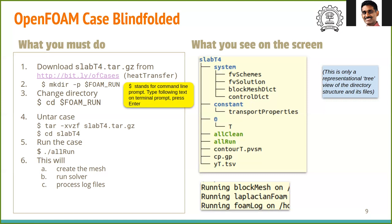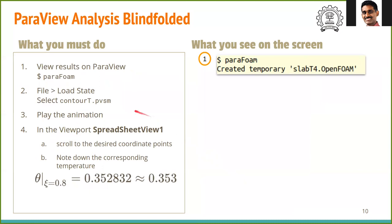Now we can process the results on ParaView. Here again, we have kept everything ready for you. Type paraFoam. Note that this is not ParaView but paraFoam. This is a special way to call ParaView to process OpenFOAM results. You will see a message created a temporary slabT4.OpenFOAM on the terminal.